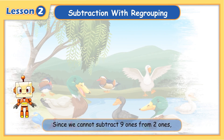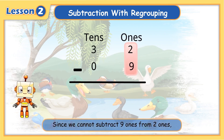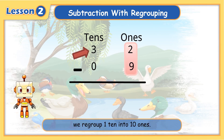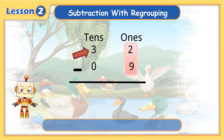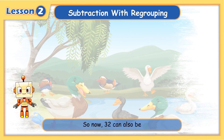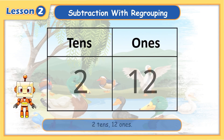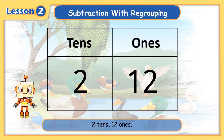Since we cannot subtract nine ones from two ones, we regroup one ten into ten ones. So now, thirty-two can also be two tens, twelve ones.